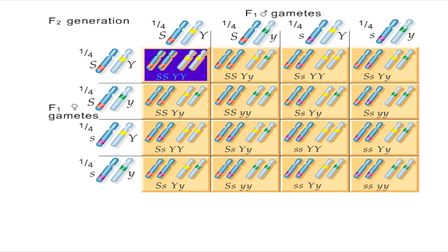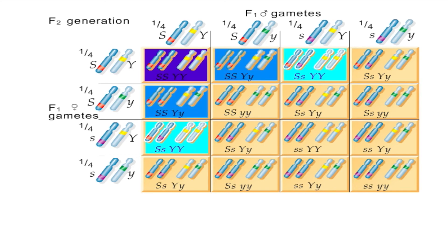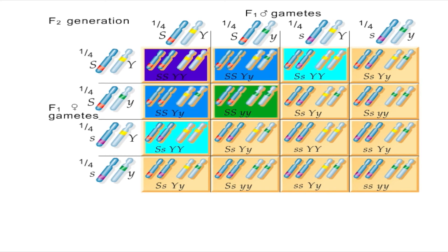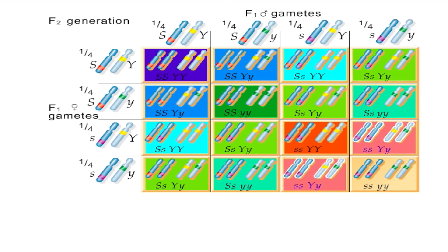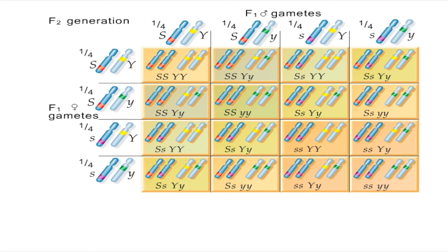Of the sixteen possible combinations of gametic fusions, nine different genotypes are produced. However, due to dominance effects,